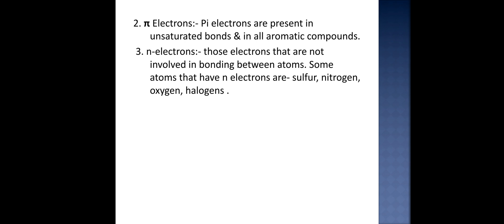Second is pi electrons, which are present in the unsaturated bonds and in all aromatic compounds. Next is n electrons. Those electrons that are not involved in the bonding between atoms are called n electrons. Some atoms like sulfur, nitrogen, oxygen, and halogens contain these n electrons.